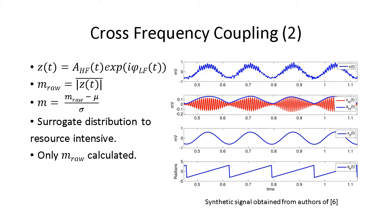In the figure on the right, we see an example of a synthetic cross-frequency coupling signal. You can see that the high-frequency amplitude is higher at certain portions of the low-frequency signal and lower in the rest. The second plot is the high-frequency bandpass signal and its instantaneous amplitude in blue. The third and fourth plots show the bandpass filtered low-frequency signals and instantaneous phase.